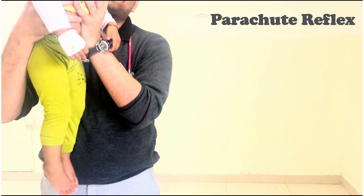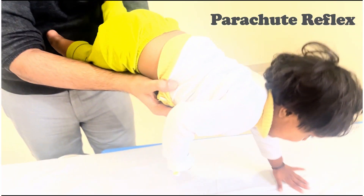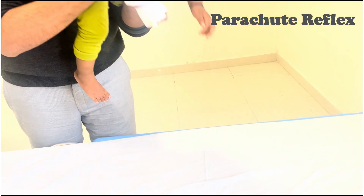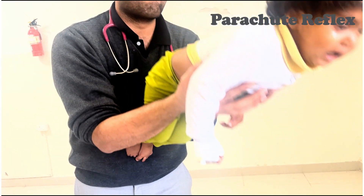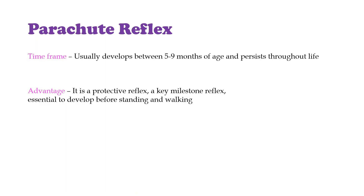In the parachute reflex, when an infant is held upright and its body is quickly bent forwards, he extends his arms forwards as if trying to break the fall, as demonstrated in this video. Note that the child is not moving his right hand because a cannula has been inserted on that hand. This reflex appears at 5 to 9 months of age, persists throughout life, and is a key protective milestone reflex essential before standing and walking is achieved.